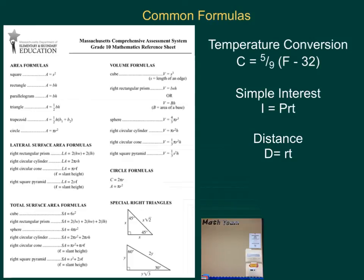Some other important formulas: temperature conversion from Celsius to Fahrenheit is C = 5/9(F - 32). Simple interest: I = PRT, where I is interest earned, P is principal deposited, R is interest rate as a decimal, and T is number of years. Distance: D = rt, where distance equals rate times time. These are formulas you'd probably want to be familiar with. Memorize as many as you can, but don't go too crazy.